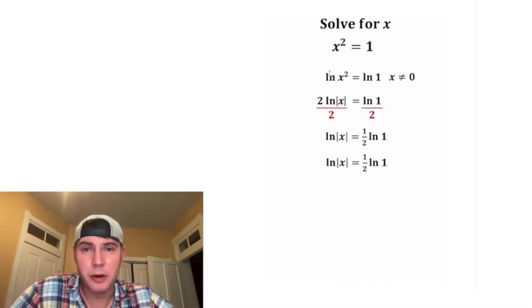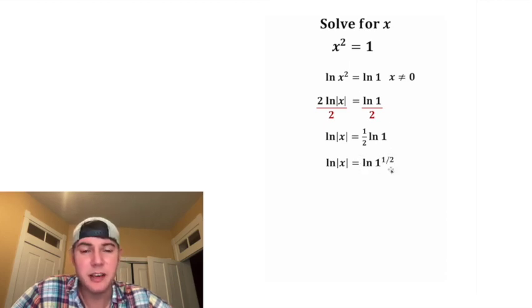So just like before when we brought the 2 to the front, this 1 half can become the exponent. So the 1 half exponent means the same thing as the square root. So 1 to the 1 half is the same thing as the square root of 1. And let's bring down the rest of this stuff. So natural log of square root of 1 is just natural log of 1.